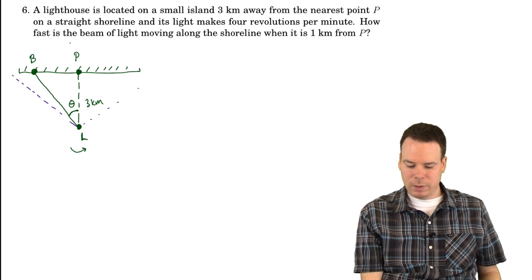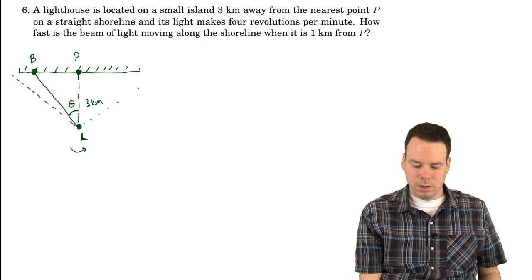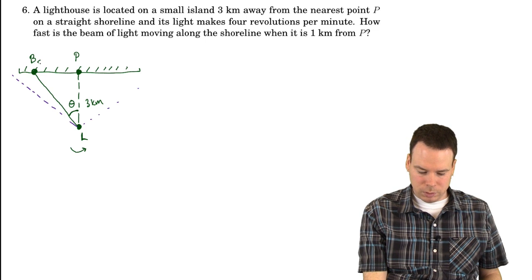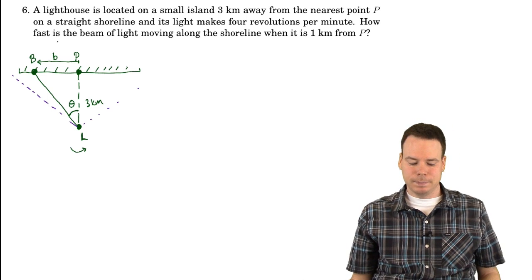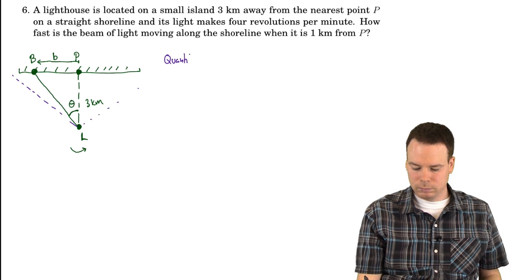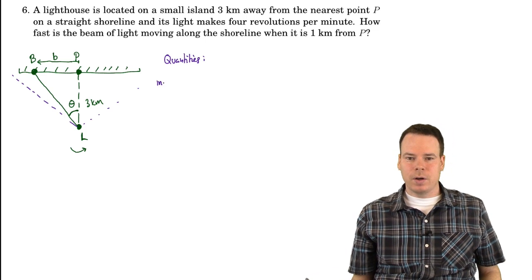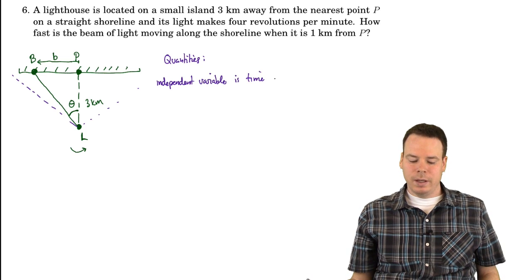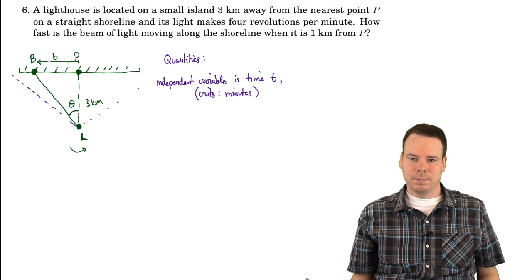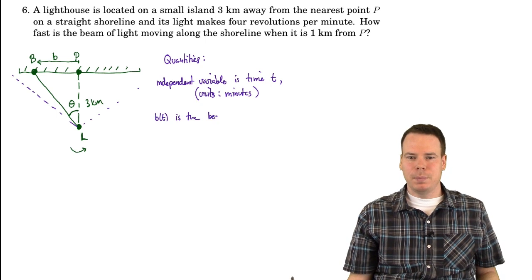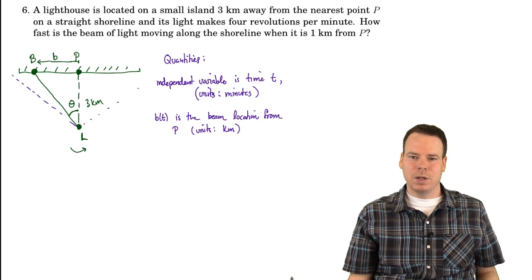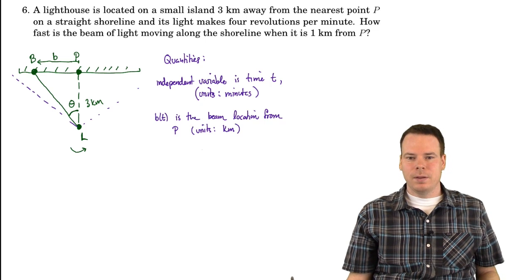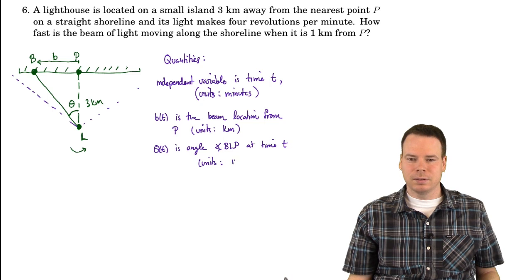I also want to know something about how fast the beam of light is moving along the shoreline — the rate of change of position. So I'll indicate the position of the beam from the point P, calling that distance b. Our independent variable is time t in minutes. B(t) is the position of the beam from point P along the shoreline in kilometers, and theta(t) is the angle BLP at time t, measured in radians.